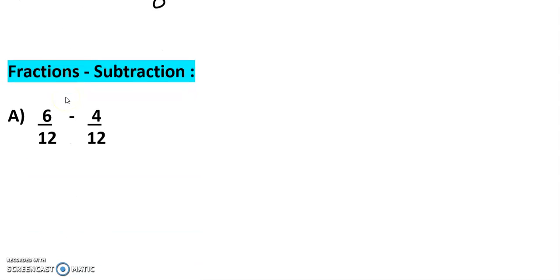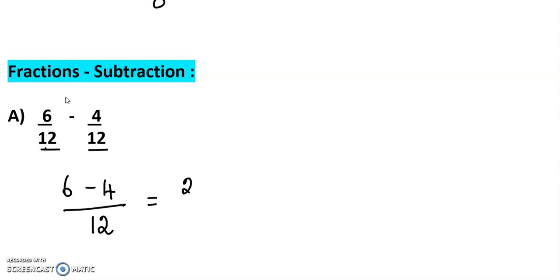Now we are going to see fractions subtraction. For like fraction subtraction, we subtract the numerators, just as we added them in addition, and keep the common denominator. So: 6/12 minus 4/12 — subtract the numerators: 6 minus 4 equals 2. The answer is 2/12.